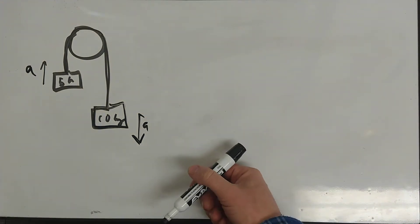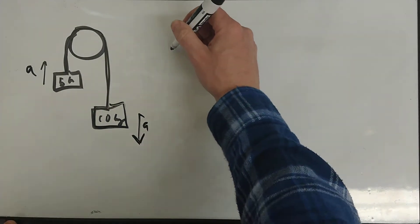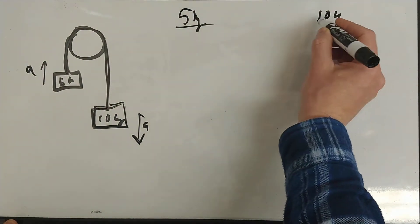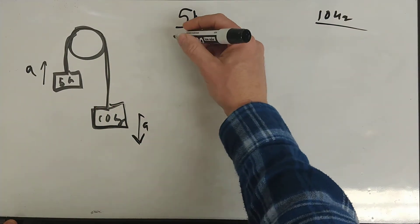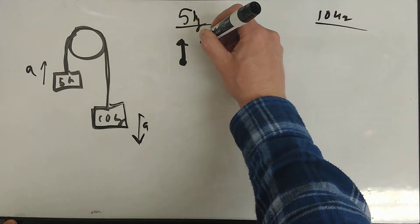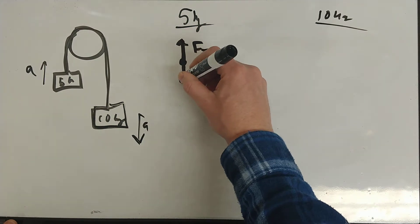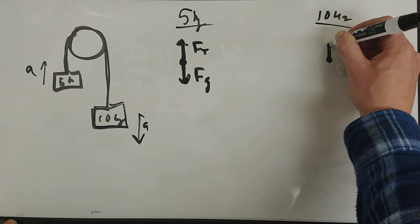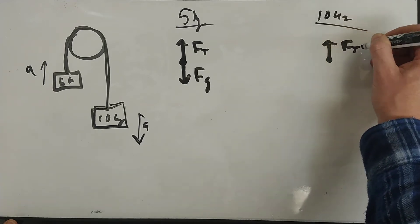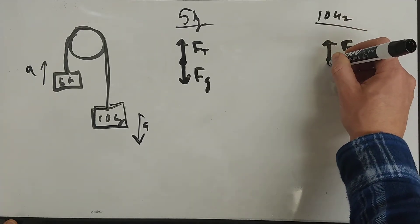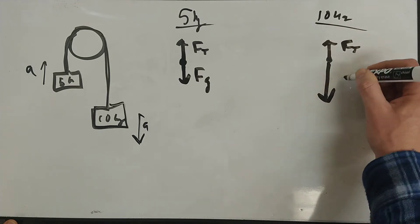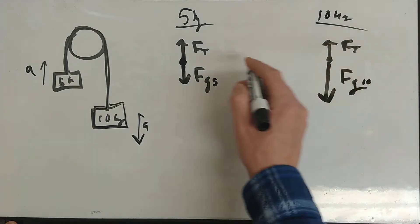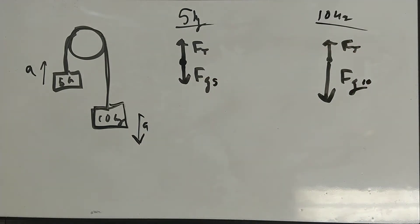Now there's a couple ways to do this. We can draw a force diagram for each object. Some of you like doing it this way. I'm going to draw a force diagram for each object, 5 kilogram and then 10 kilogram. 5 kilogram has the force of tension pulling it up. It has its own force of gravity pulling it down. The 10 kilogram has the same force of tension holding it up.